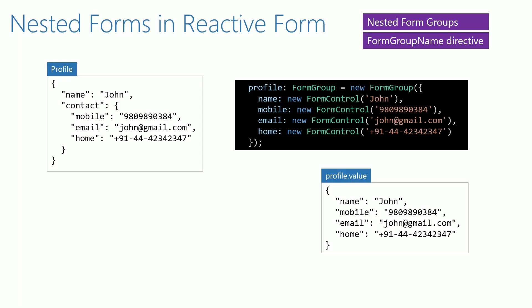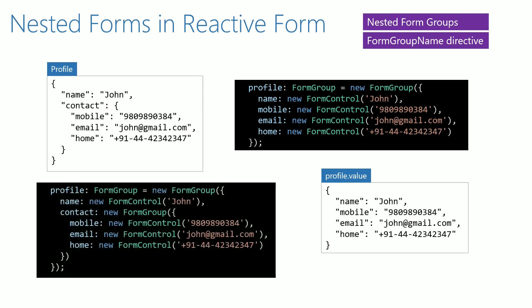To achieve the same expected model, the form group object can be defined like this. Notice the inclusion of a contact property having the data type as form group. Defining a form group within a form group is called nested form groups. The contact details specific form control objects are created within this inner form group. The value property of this form group object will have the object exactly similar to the expected data model received from the backend.